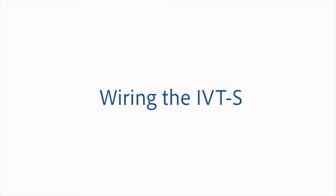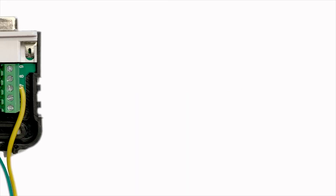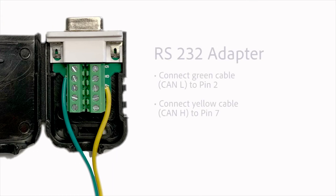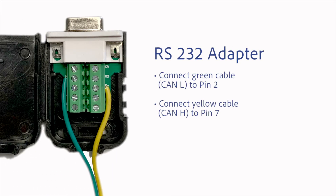First we will wire the CAN connection. We will connect the green cable, which is CAN low, to pin 2, and the yellow cable, which is CAN high, to pin 7 of the RS-232 adapter.